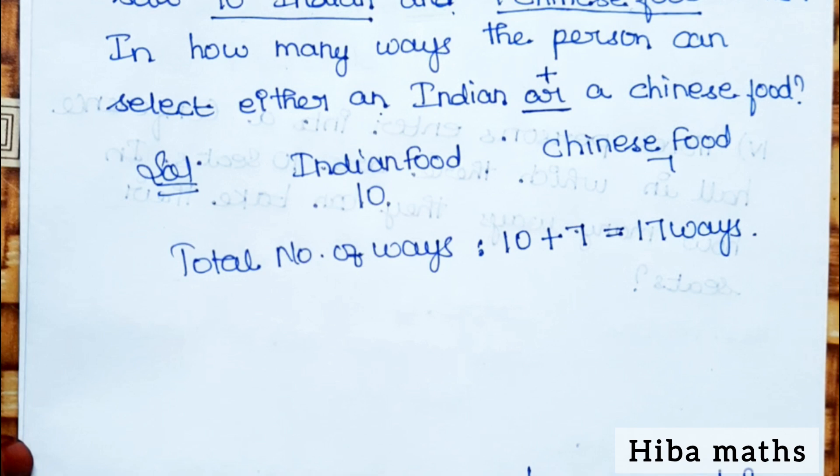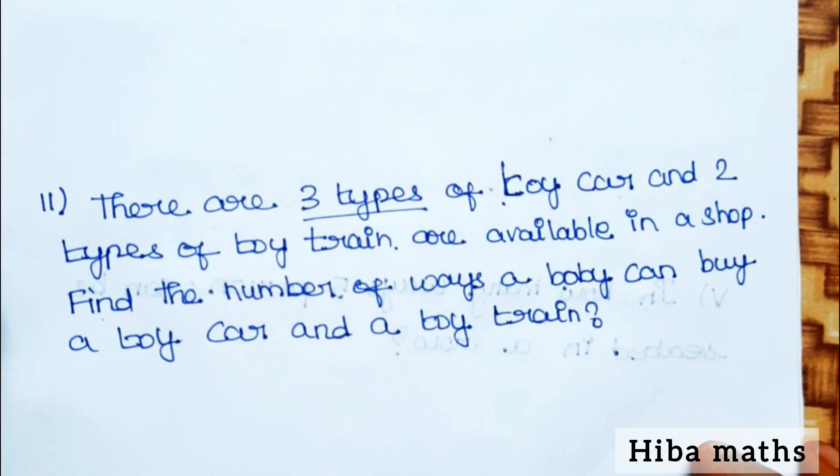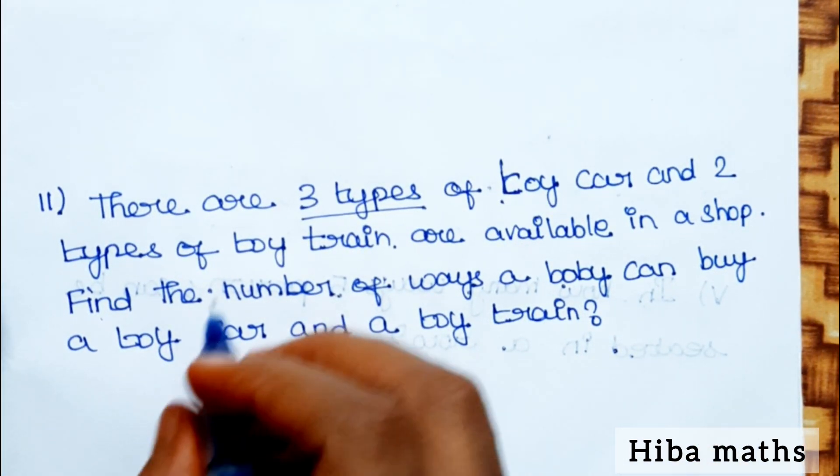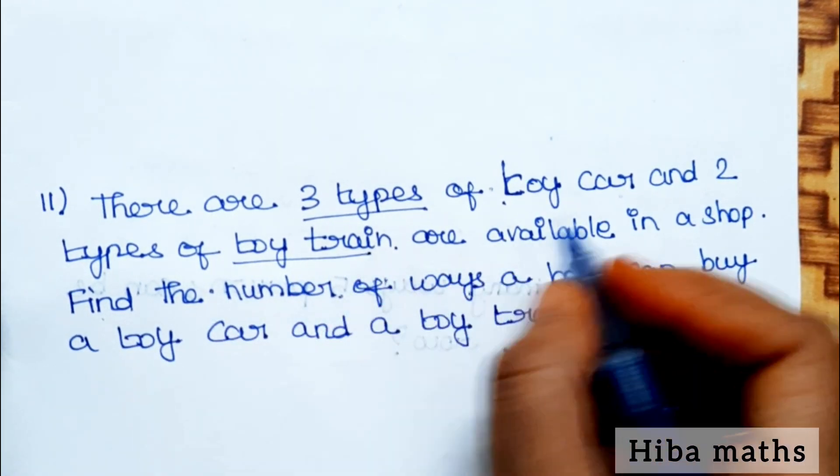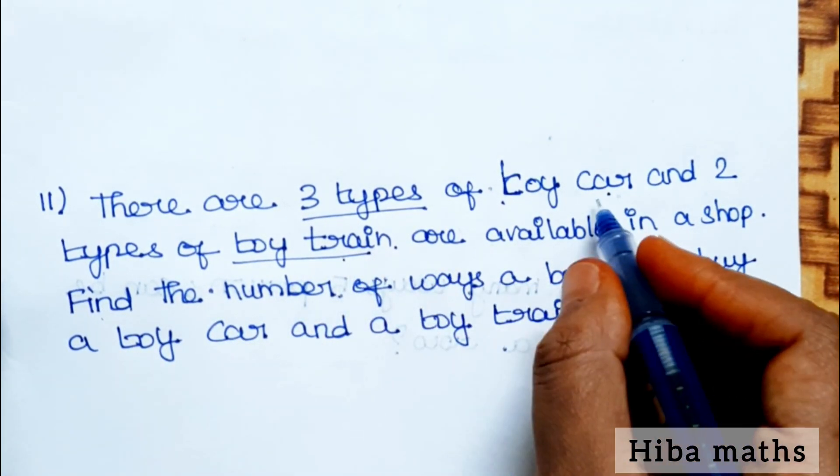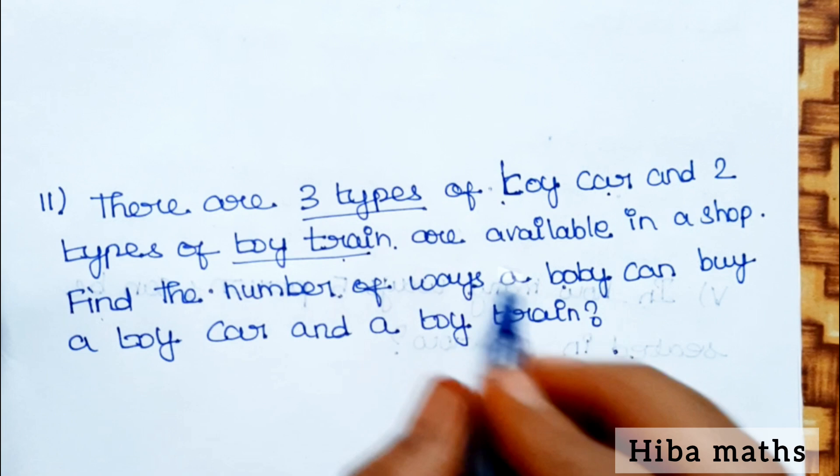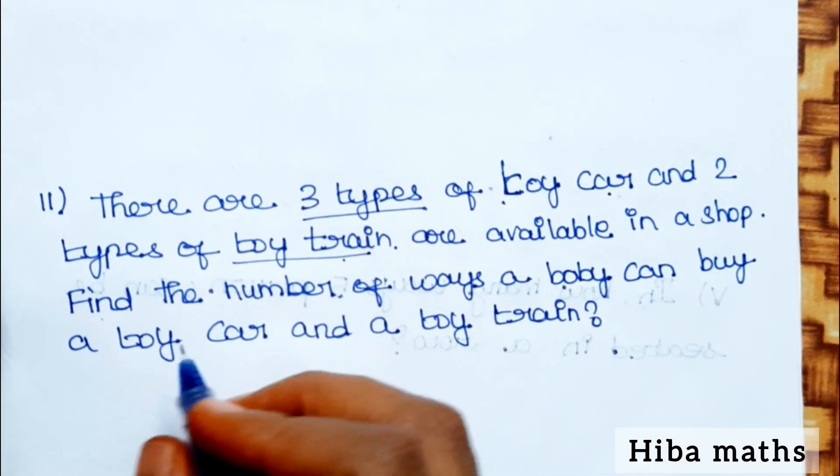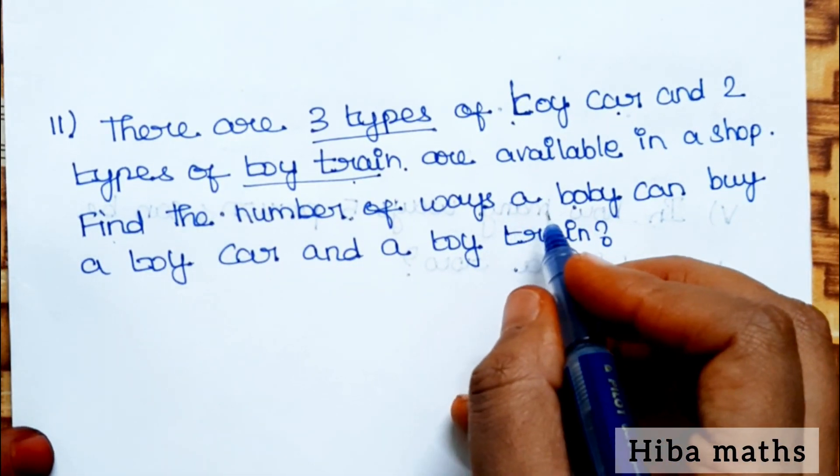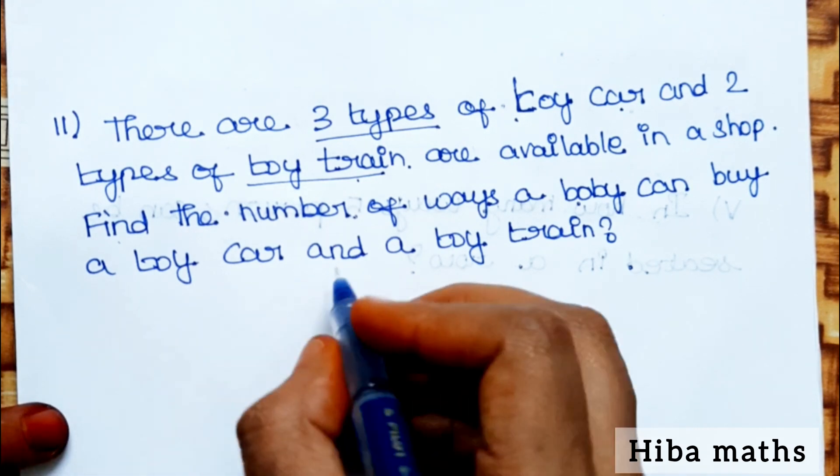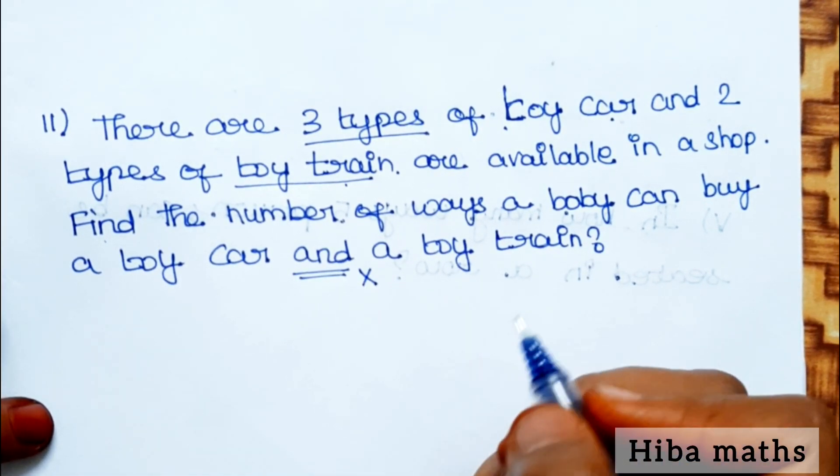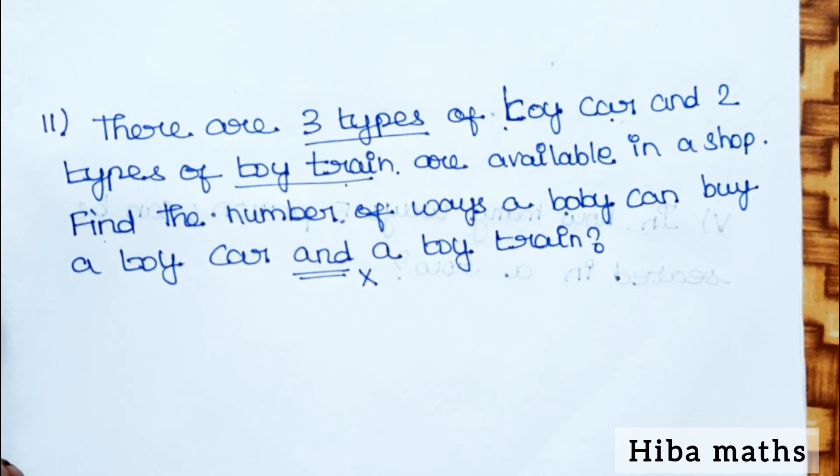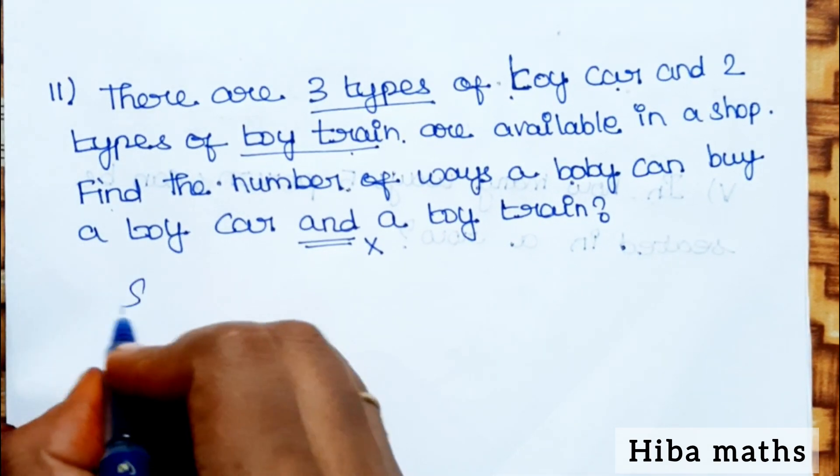Second question: There are 3 types of toy car and 2 types of toy train available in a shop. Find the number of ways a baby can buy a toy car and a toy train. For and, we use multiplication.